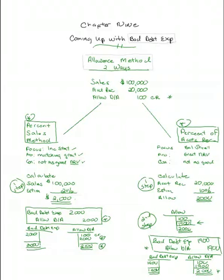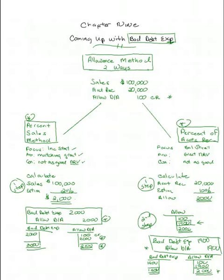That is a review of the allowance method of accounting for doubtful accounts, specifically how you come up with the bad debt expense at the end of the period. We've now learned how to write off an account and how to come up with the bad debt expense at the end of the period. Please review this pencast more than once — this is a tricky subject. There's one more piece to it: what happens if the allowance account has a debit balance. We'll do that on a separate pencast.